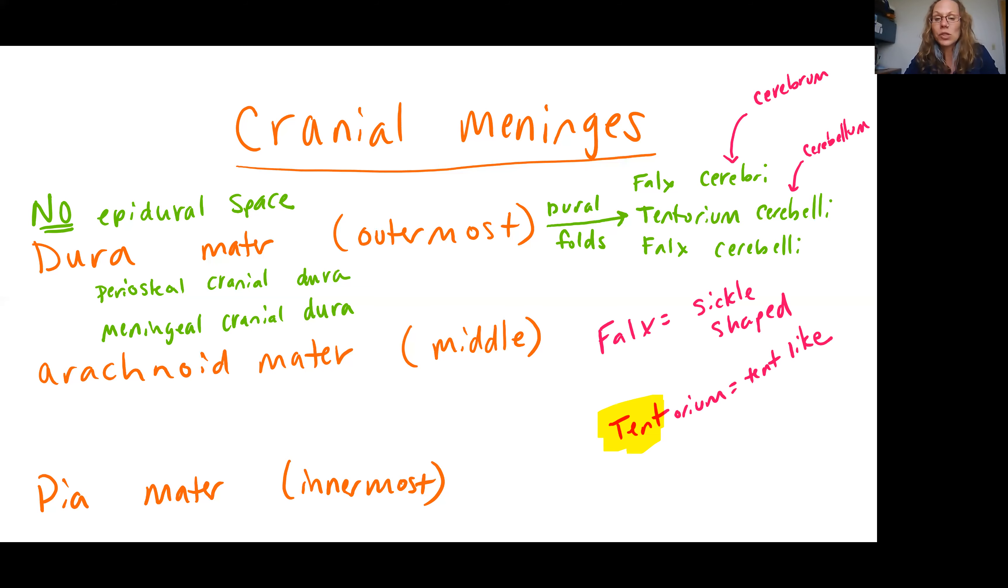The term falx means sickle-shaped, so it helps us to remember its location once we've seen a nice diagram. And tentorium means tent-like, which is pretty easy to remember since tent is at the beginning of the name.